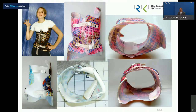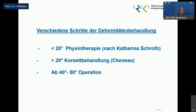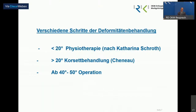Natürlich immer begleitend auch die Krankengymnastik. Einerseits schadet Krankengymnastik nicht. Andererseits gibt es speziell bei neuromuskulären Erkrankungen durchaus die Möglichkeit, damit eine Aufrichtung zu erzielen. Das grobe Einteilungsschema: bei kleineren Winkelgraden unter 20 Grad nur mit Krankengymnastik behandeln, bei größeren Krümmungsgraden mit Korsett beginnen, und ab 40 bis 50 Grad spricht man auch über die Operation.